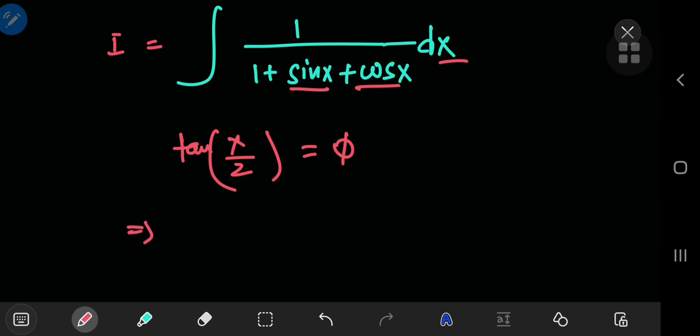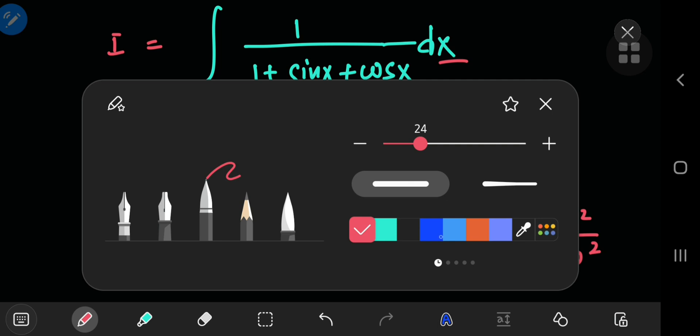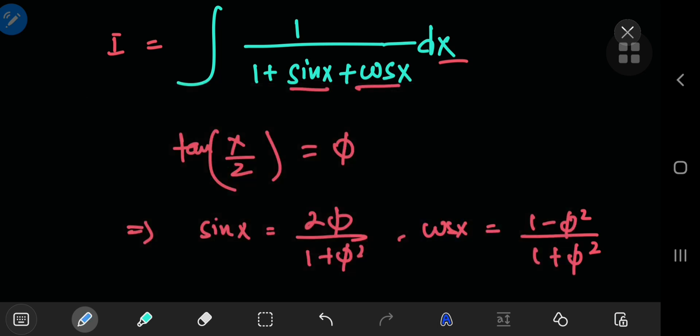According to the substitution, the sine of x becomes 2 times phi divided by 1 plus phi squared, and the cosine of x becomes 1 minus phi squared divided by 1 plus phi squared.